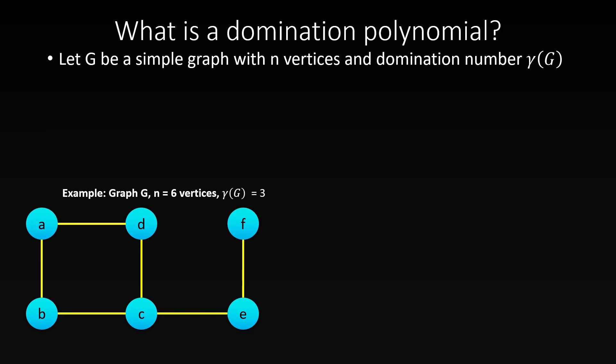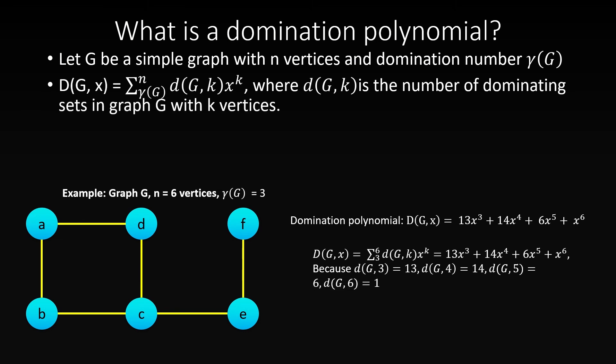The domination polynomial of a graph G is defined to be the polynomial whose coefficient d(G,k) on the degree-k term is the number of dominating sets of size k in that graph. In other words, the domination polynomial is the sum from the domination number of the graph to n, the number of vertices in the graph, of d(G,k) times x to the k.